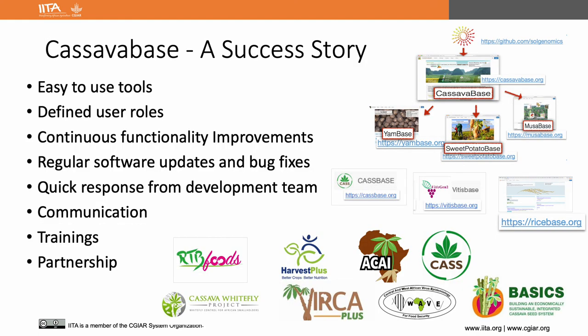From a user point of view, these are the reasons I think have made CassavaBase a successful database. This success has led to the development of other crop databases like YamBase, SweetPotatoBase, and MusaBase. Not only from other crops — even other projects working on cassava are using CassavaBase, like RTB Foods, Cassava Source to Sink, and Ground Penetrating Radar, etc. I wish and look forward to other projects working on cassava research, like Cassava Whitefly, WAVE, and VIRCA, also being able to benefit from using CassavaBase.